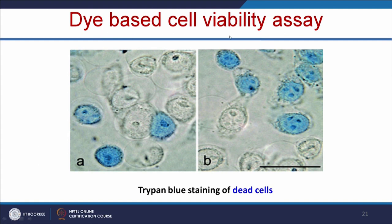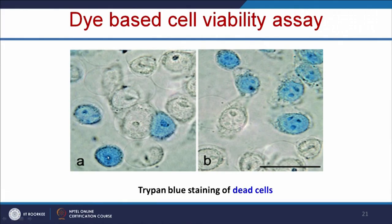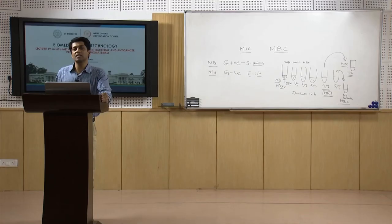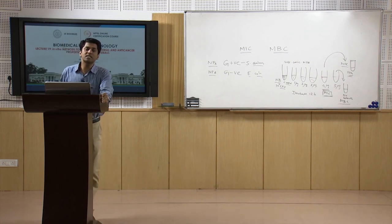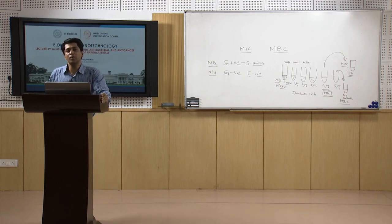The first methodology is a simple dye-based cell viability assay. It will not tell you whether the cell is following apoptosis or necrosis, but it will tell you the number of viable cells and number of dead cells. Here we use the dye called trypan blue. This trypan blue dye stains only the dead cells — viable cells will not uptake this dye, which is why this method is also called the dye exclusion method. Only dead cells, where the cell membrane integrity is lost, will uptake this dye and appear blue. Cell lines can be obtained from NCCS Pune — National Centre for Cell Science.